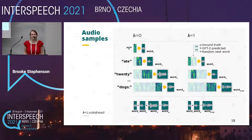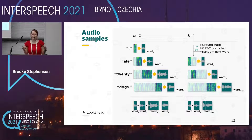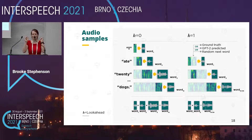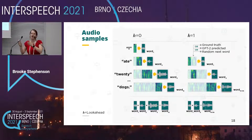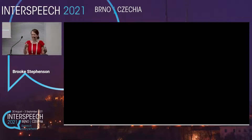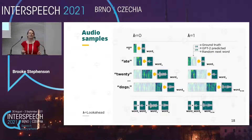To obtain audio samples, we use the following procedure: to synthesize the nth word of a sentence, we pass n plus k tokens to FastSpeech 2 and get the spectrogram, then retain only the spectrogram frames for the nth word and pass those frames to the vocoder. Once we have a waveform for each word, we concatenate them together using a 5-millisecond crossfade to eliminate glitches in the audio.